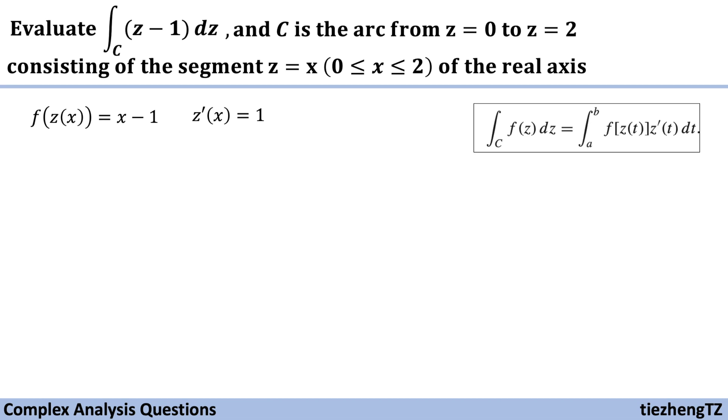So next, we just need to substitute. Our function becomes integral from 0 to 2, f(z(x)) times z'(x) dx. It becomes x minus 1 integral.